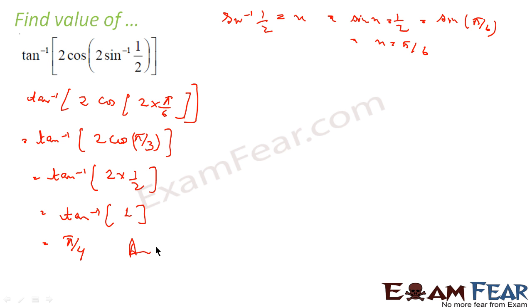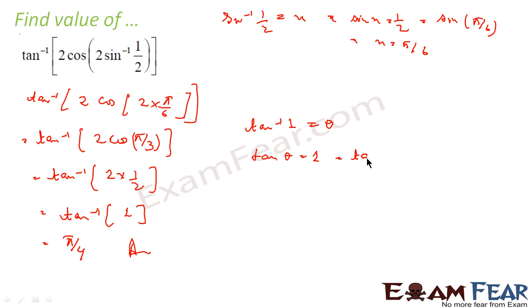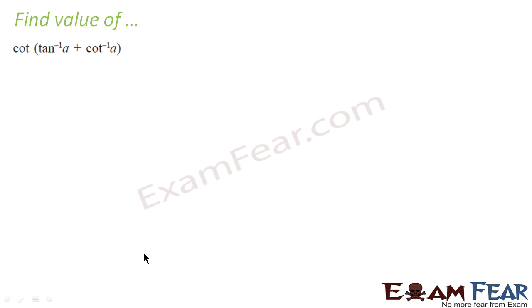In case we need to verify: tan⁻¹(1) = θ means tan(θ) = 1 = tan(π/4), so tan⁻¹(1) = π/4. That is the answer.